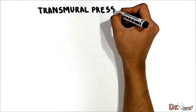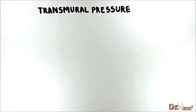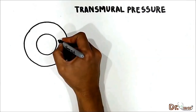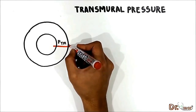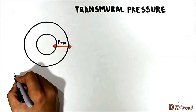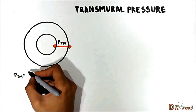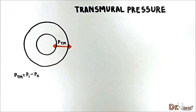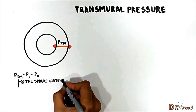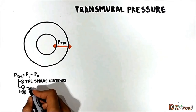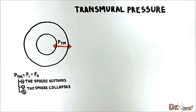In this part of the video we'll talk about transmural pressure. Transmural pressure is a pressure gradient across any tube or sphere. It is calculated as inside pressure minus outside pressure. This pressure determines whether the sphere will expand or collapse. If the transmural pressure is positive, the sphere distends; if negative or zero, the sphere collapses.